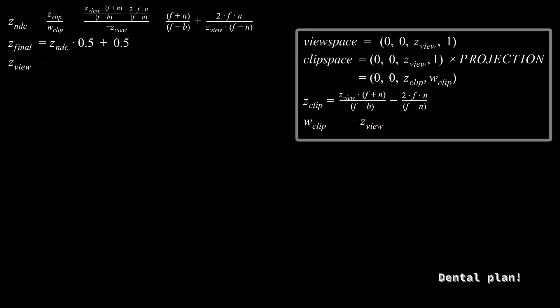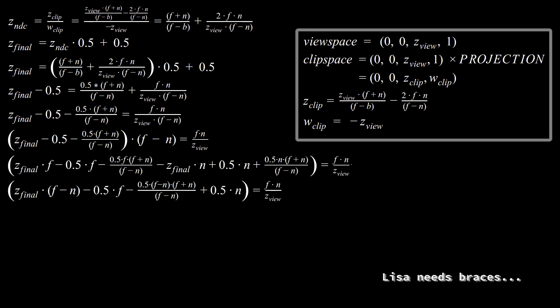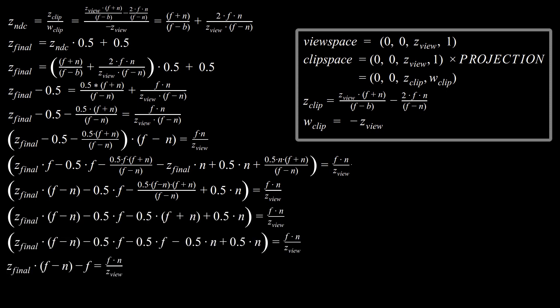Basically, the whole point of this is that we want to express the final Z as a function of ZView. We can just work our way backwards now. That means Z final is ZNDC times 0.5 plus 0.5. And then, we can substitute in that whole chunk of code for ZNDC. I won't keep narrating these, because there's a lot of stuff here. But, if you're interested, just freeze the frames of the video and follow the derivation. It's not too complicated. Try to not skip too many steps here, and it should be a mostly straightforward algebraic reduction.